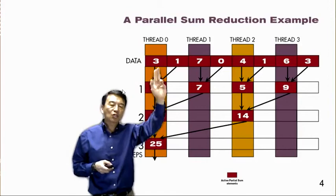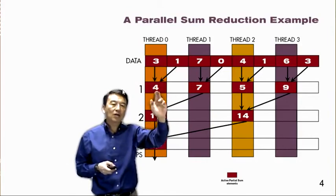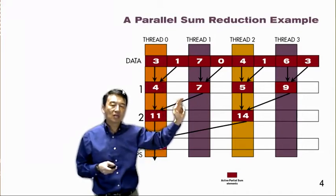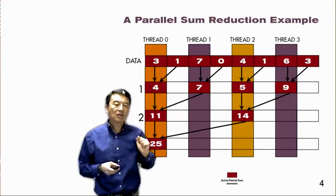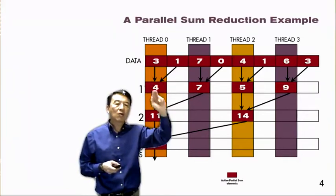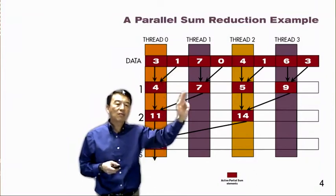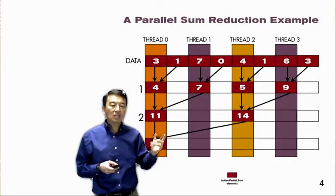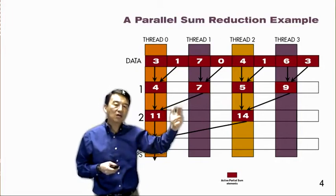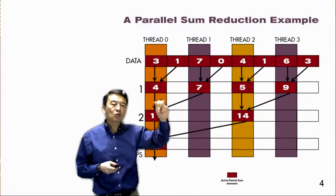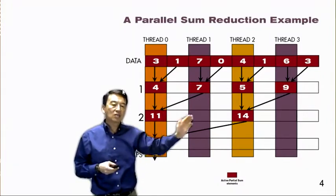In the first step, all four threads participate and each of them adds two numbers together to form the first partial sum. This produces four partial sum elements. We overwrite the shared memory array because once we have the partial sum we no longer need the original data elements. The even positions of the shared memory array are overwritten by the partial sums. In the second step, we halve the number of threads, so only thread zero and thread two are active, and each adds two partial sums together, giving us 11 and 14.